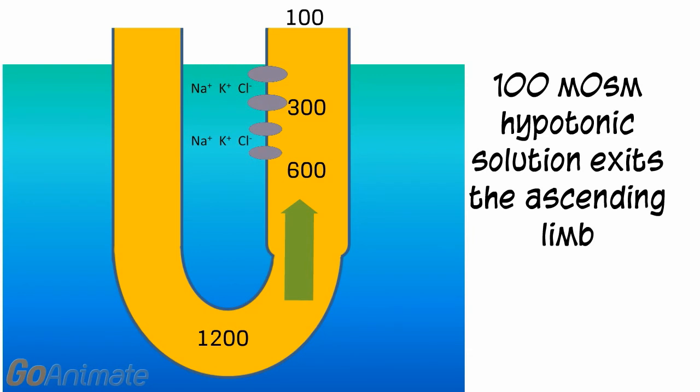The solution leaving the Nephron Loop is hypotonic, around 100 milliosmoles.